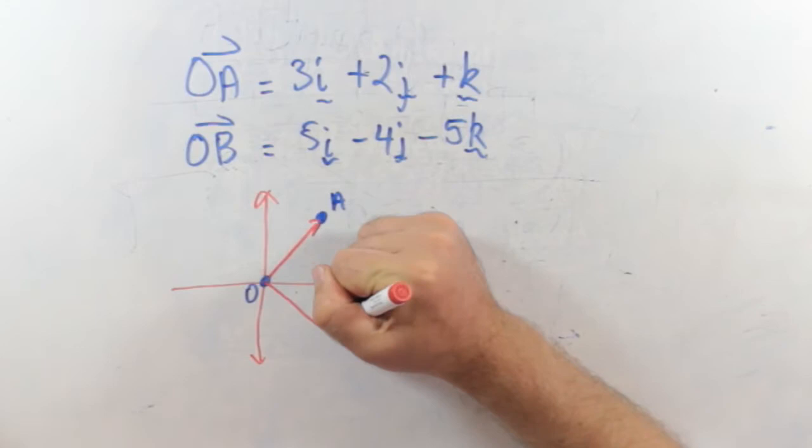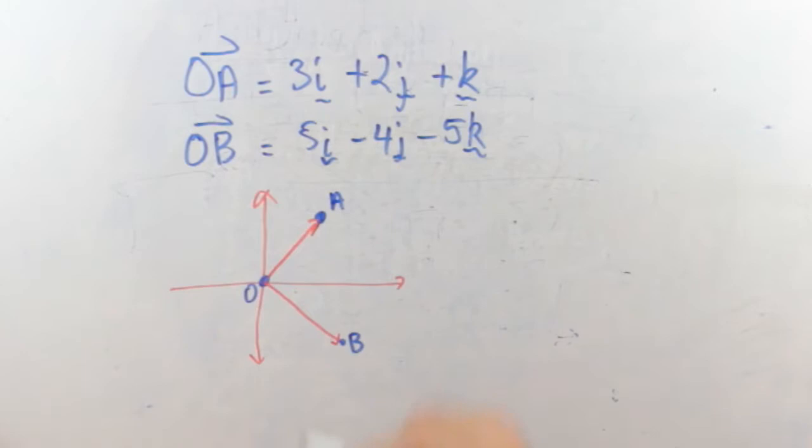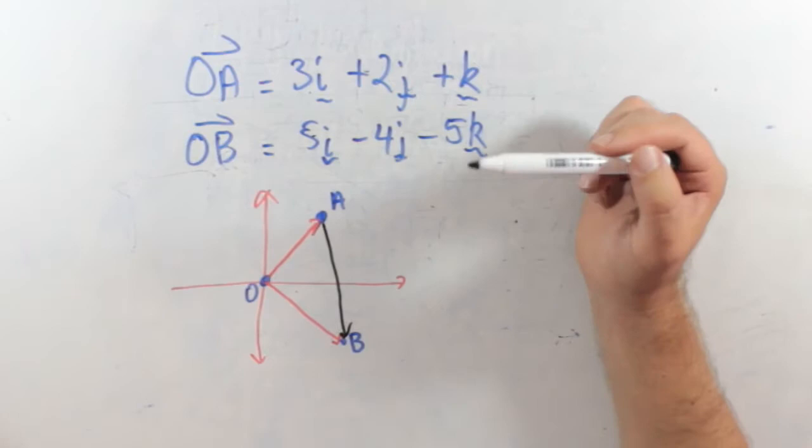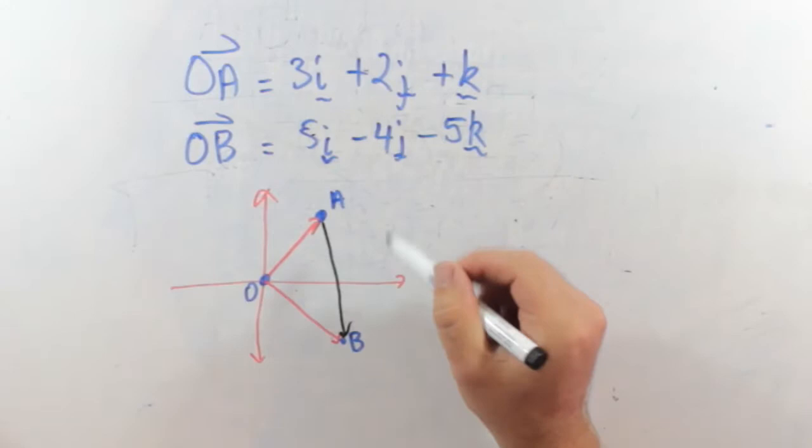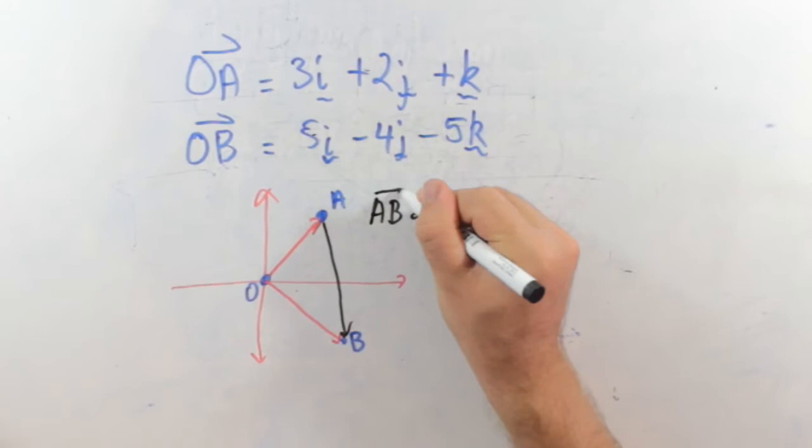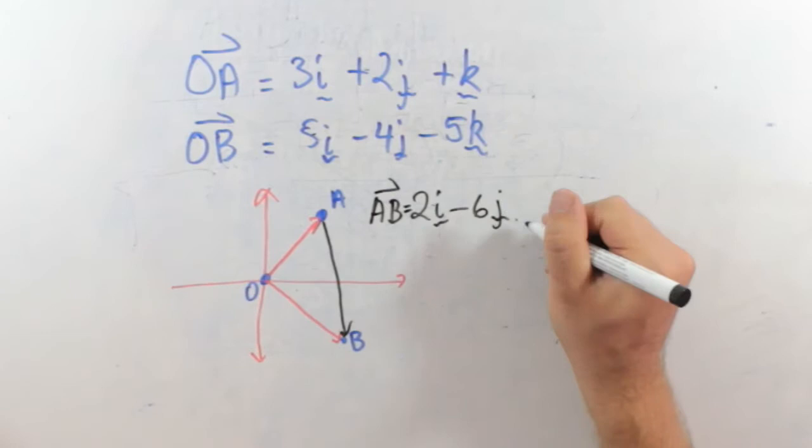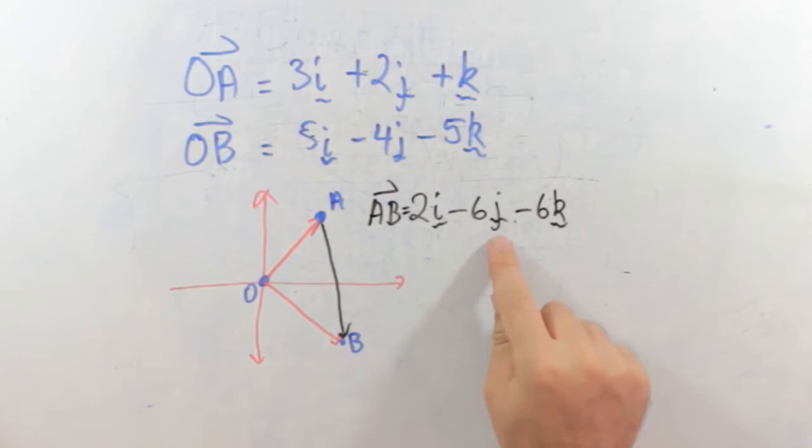So what vector is AB? So how do I find this vector AB? The great thing about this notation is it's really easy to find. You just say, well, if I start at 3i, and I've got to get to 5i, what do I have to add to this to get to this? So I've got to add 2i. So AB equals 2i. From 2 to negative 4, we'll have to minus 6 to get that way. And from 1 to negative 5, that's also minus 6k. So AB is 2i minus 6j minus 6k.